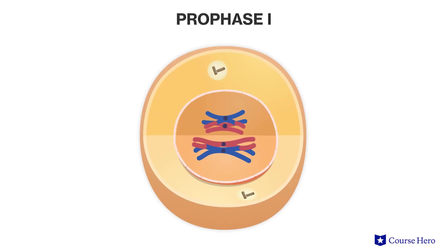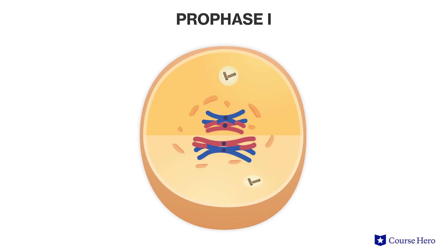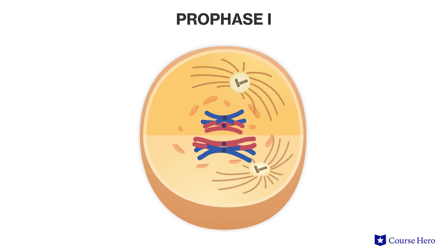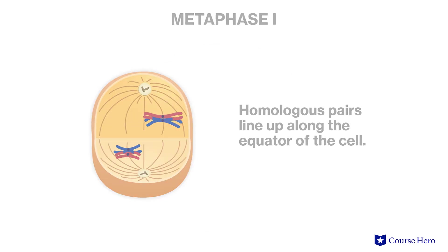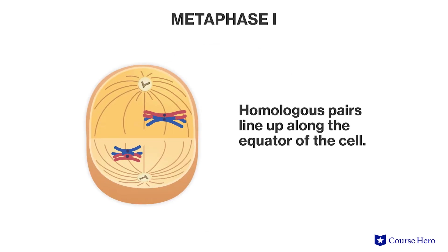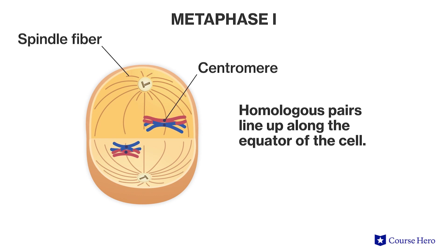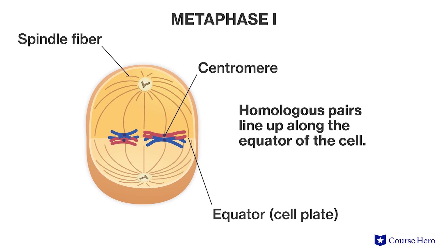Near the end of prophase one, the nuclear envelope breaks down and the spindle forms, setting the stage for metaphase one. In metaphase one, the homologous pairs are attached at the centromeres to the spindle fibers and they line up along the equator of the cell, also known as the cell plate.